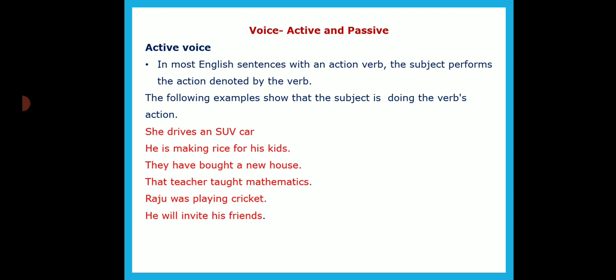Let us look at these sentences again and identify in which tense each one is. 'She drives an SUV car' is simple present tense — she does it almost every day. If you look at the verb 'drives,' you can easily identify it is simple present tense.